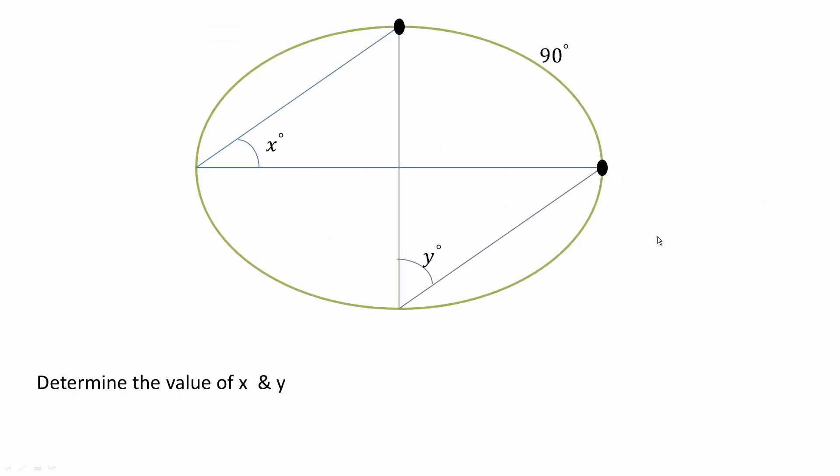Now inscribed angles can solve a lot of problems. For example, if this arc is 90 degrees and we want to solve for x and y, we can do so using inscribed angles. This right here is an inscribed angle. x is an inscribed angle. Likewise,